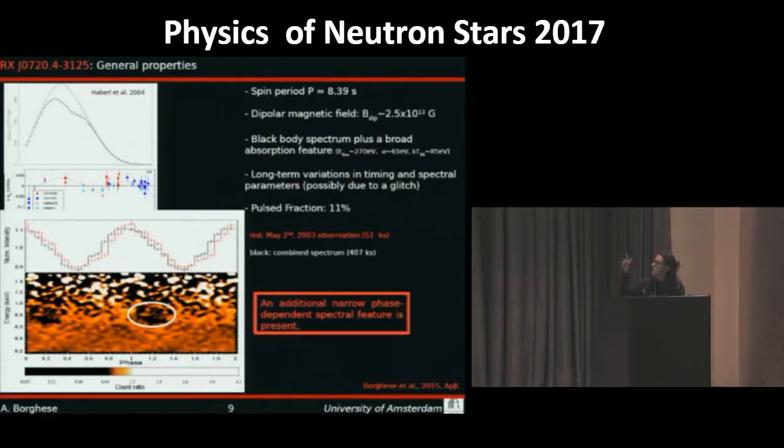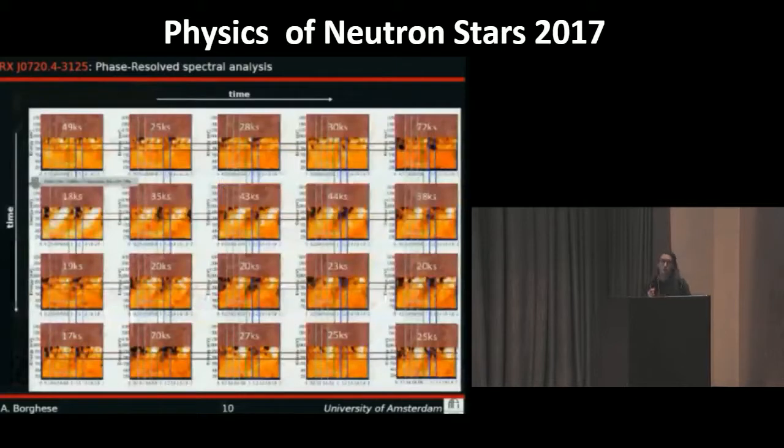It's dominant during the decline of the pulse profile, plotted in the top panel. In black is the combined spectrum that we obtained merging all available XMM-Newton observations, and in red is for the longest observation.